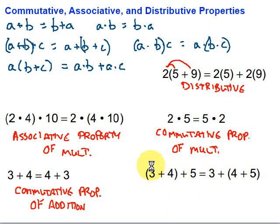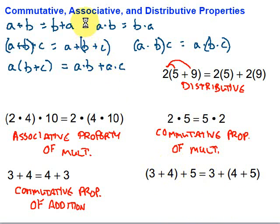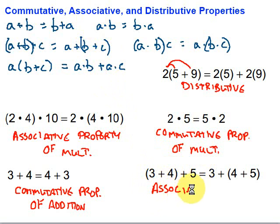We have 3, 4, and 5 on both sides in the same order — what's different is the grouping symbols. To group, to hang out in a group, is to associate with people. That's what we've got here: the associative property. And since we're adding, it's the associative property of addition.